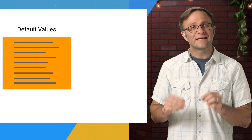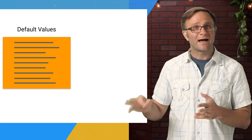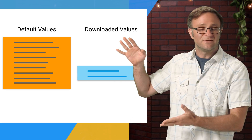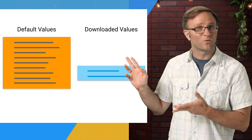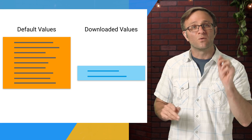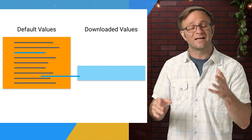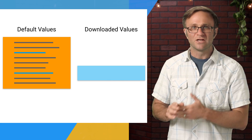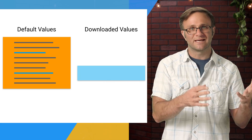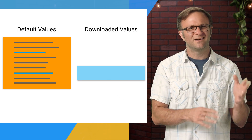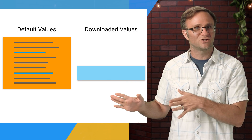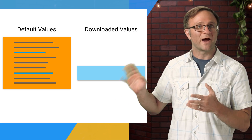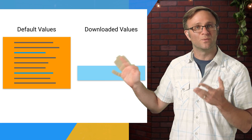Remember, you only download values from the cloud that are different from your defaults. So adding all these defaults won't increase the size of your network calls, but it will give you the flexibility to change any of those values later. You don't want to be in a position three months later when you decide you really should change the speed of your animations, and realize that animation speed hasn't been wired up to use Remote Config.